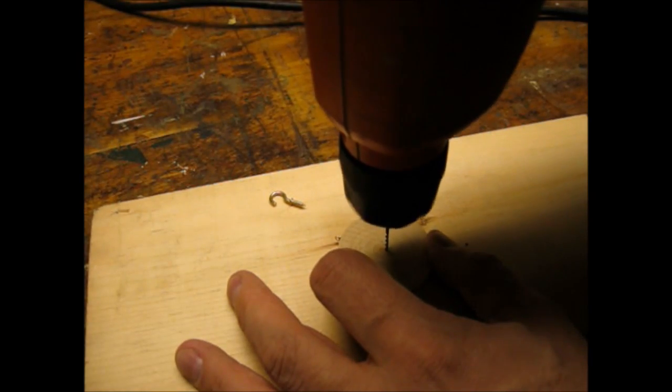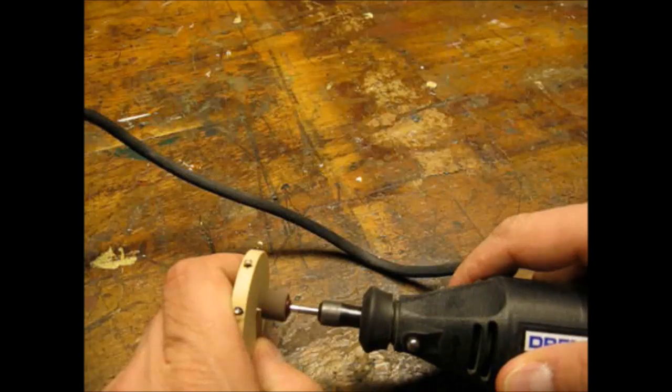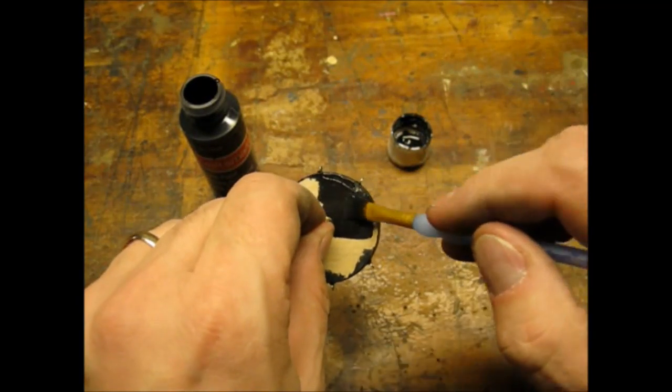The eye hook I had poked through the disc so I just ground off the excess with my Dremel. I used black acrylic from the craft store to paint the disc.